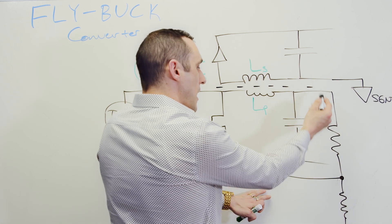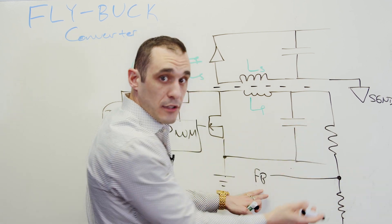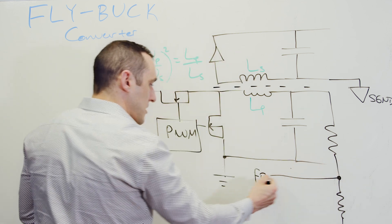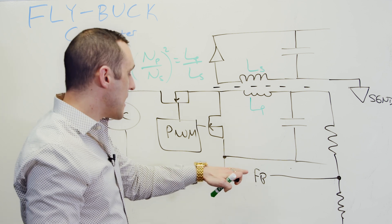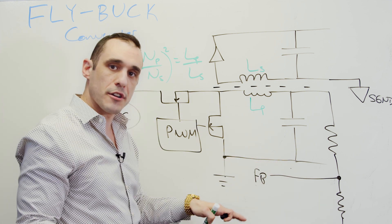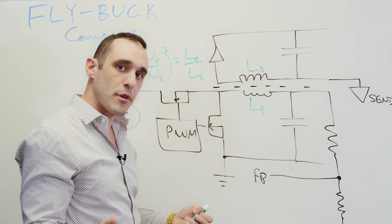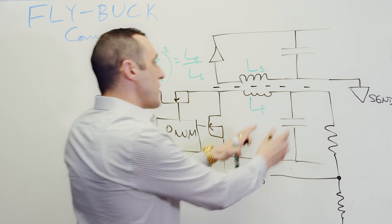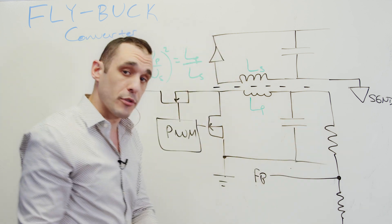And then the current that travels into this feedback pin biases that feedback pin, and then the voltage measurement that you use here is compared with a silicon band gap reference that's used to then adjust the PWM signal so that you maintain a constant target output voltage.